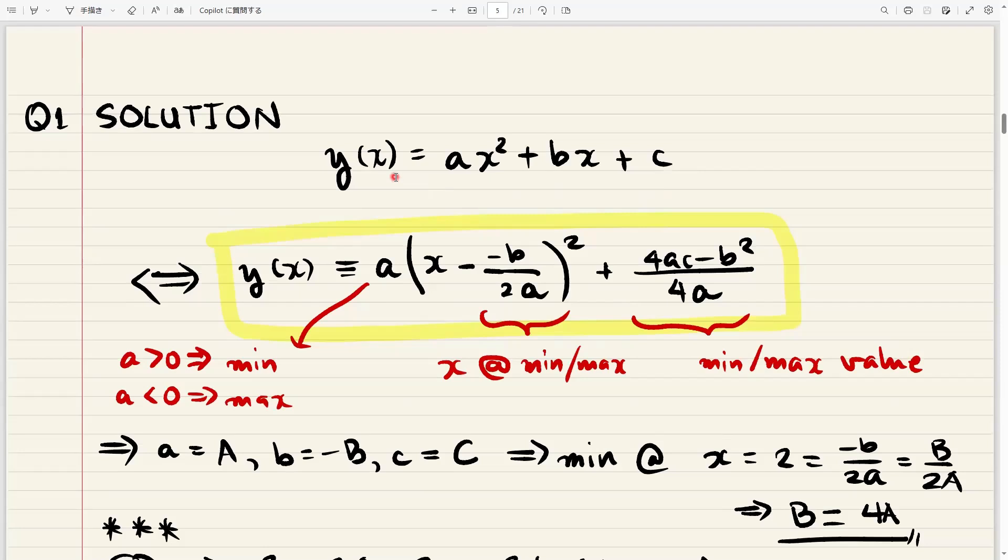What we know about this general quadratic function is that you can write it in this form here. And why we write it in this form is because if we write it in this form, we can easily see the minimum value or the maximum value. In fact, this is going to be our minimum or maximum value. This term here is the x, the value of x, where the minimum or the maximum happens. And this a here tells us whether we have a minimum or maximum. If it's greater than zero, we have a minimum. If it's less than zero, we have a maximum.